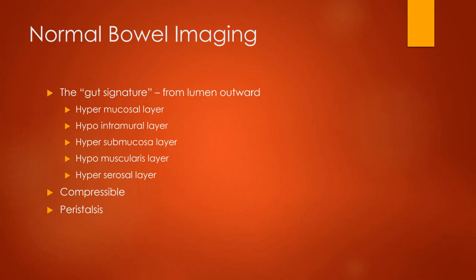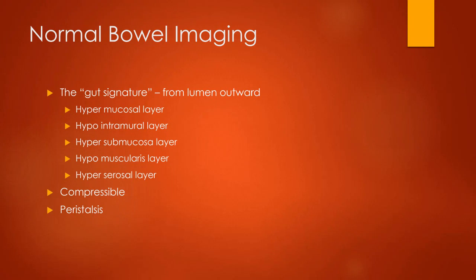Moving into gastrointestinal pathology — bowel is not our friend on ultrasound, but we need to know what it looks like. Normal bowel imaging is known as the gut signature, going from the lumen outward: hyperechoic mucosal layer, hypoechoic intramural, hyperechoic submucosal, hypoechoic muscularis, and hyperechoic serosa. Normal bowel is compressible — when we put pressure on it, it should move or compress — and we should be visualizing peristalsis, watching that bowel actively move and transport material through it while scanning.